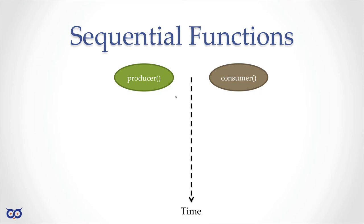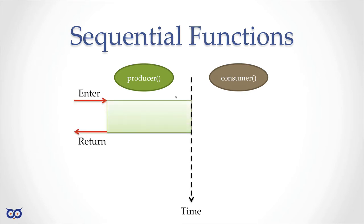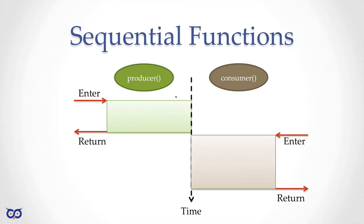Before we get into any coding, let's get some concepts and terminology out of the way. Let's talk about sequential functions. Say I have two functions, one called producer and one called consumer. The producer creates some data which the consumer will then use. In that case, my producer must run to completion first before the consumer can work. This is how we've been writing code so far — these are sequential functions.